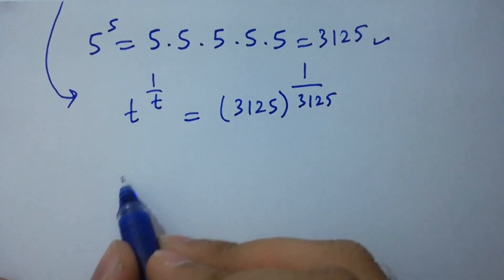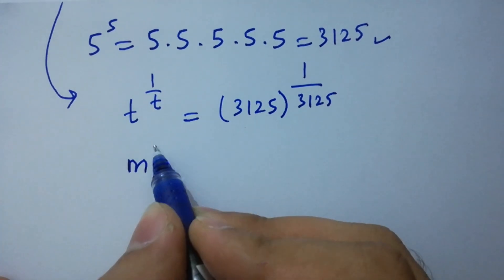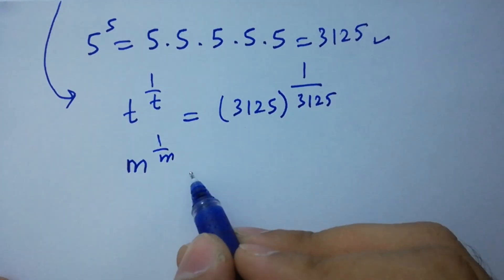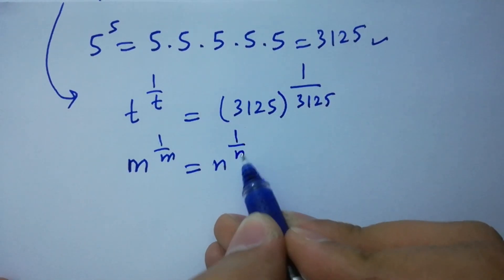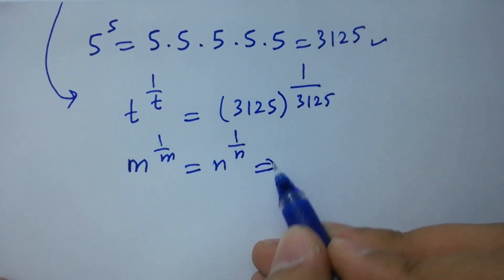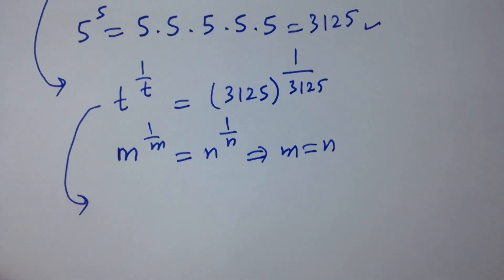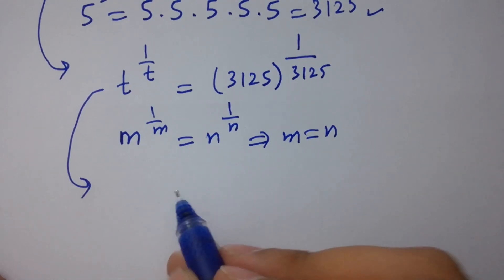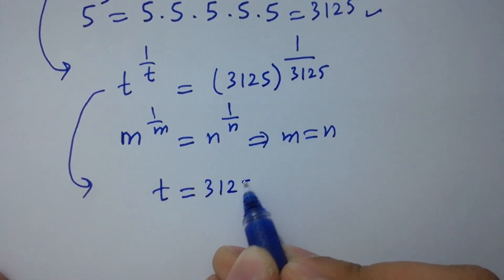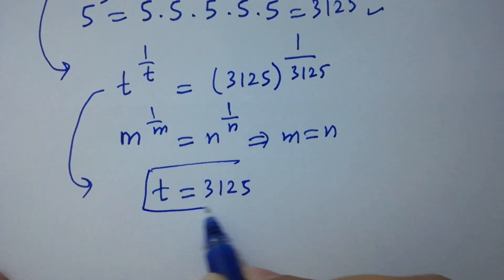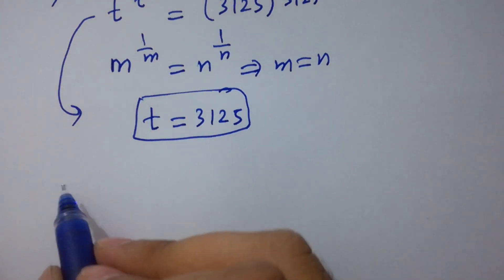Using the property that if m to the power 1 over m equals n to the power 1 over n, then m equals n. So we get the value of t which is equal to 3125.